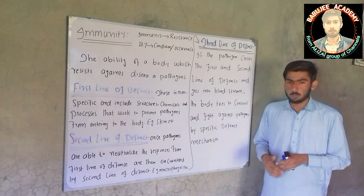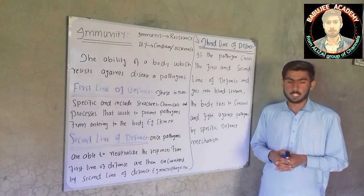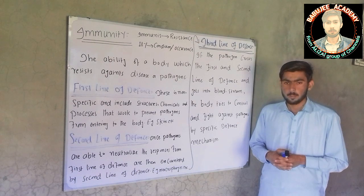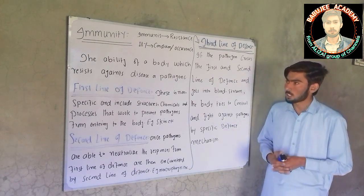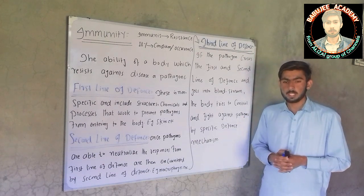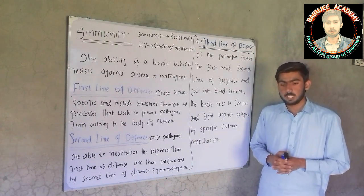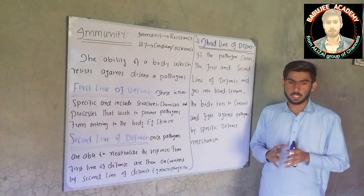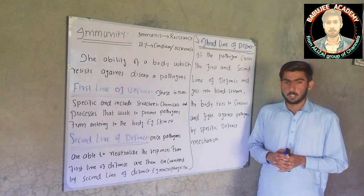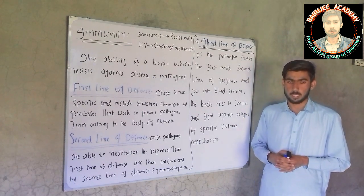What is the immunity system? A system which is responsible for protecting us from diseases or pathogens — disease-causing agents — we call it the immunity system. Every day, every second we ingest thousands of microbes or pathogens but still we are disease-free and protected. Why? Because of our immunity system.